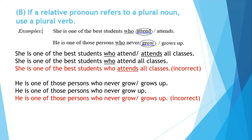In the previous examples, the relative pronoun referred to a singular noun, so we used a singular verb. Now we move to the opposite case: if the relative pronoun refers to a plural noun, we use a plural verb. In the previous slide the relative pronoun was singular so we used a singular verb; in this slide the relative pronoun is plural so we will use a plural verb.